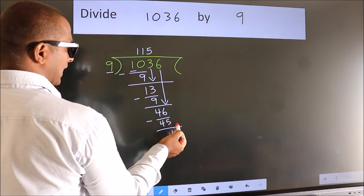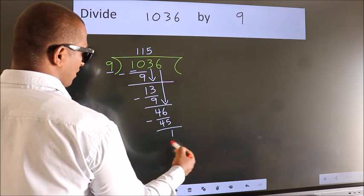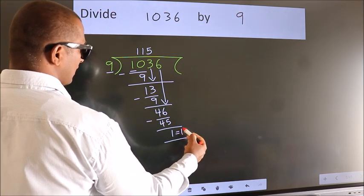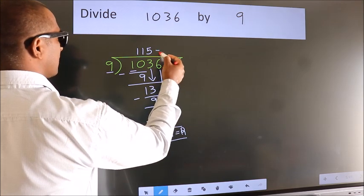No more numbers to bring it down, so we stop here. This is our remainder. This is our quotient.